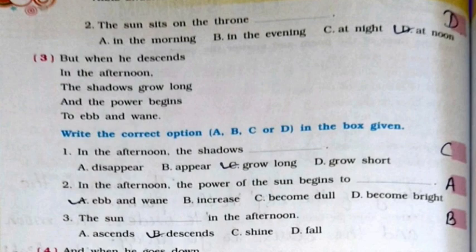Next MCQ's first one: in the afternoon, the shadows grow long — it's option number C. Second, in the afternoon, the power of the sun begins to ebb and wane — it's option number A. Third, the sun descends in the afternoon — it's option number B.